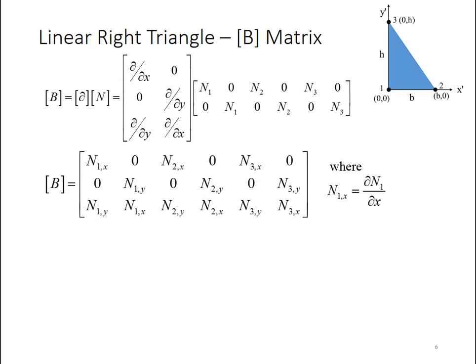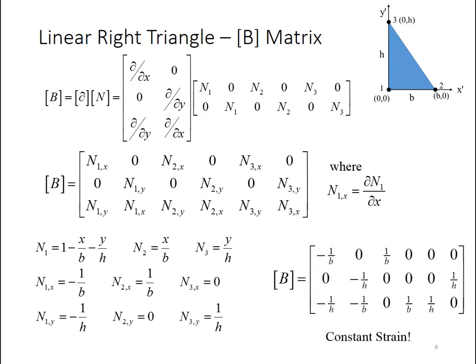So, n1 comma x is dn1 dx. Now, I know what my shape functions are, so I can actually calculate all of these partial derivatives. Here are the shape functions I previously developed. So, the partial derivatives with respect to x are straightforward. And similarly, with respect to y, there's a straightforward. I can take all of these partial derivatives, plug them into that B matrix, and I get this matrix.